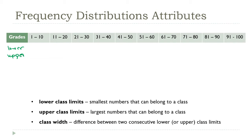The lower class limits are just the smallest values in each class. So for our data, that would be 1, 11, 21, 31, and so on, up to the last class, that's 91.